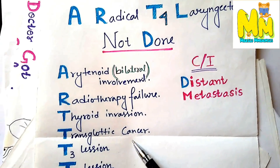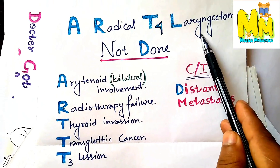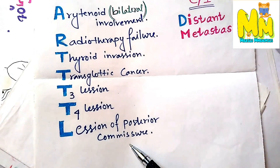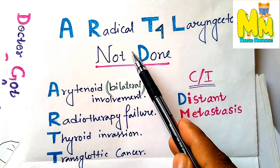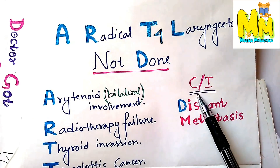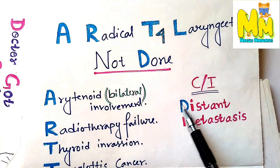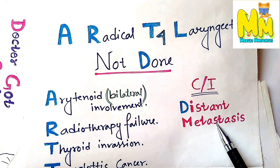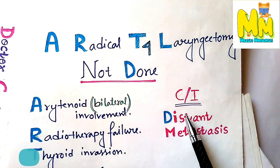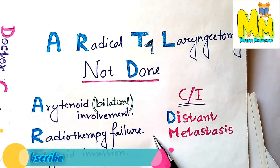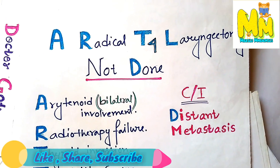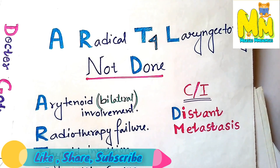L is for lesion of posterior commissure. By the phrase 'Not Done,' it represents the contraindication. D stands for distant metastasis — when there is distant metastasis, total laryngectomy is contraindicated. That completes our mnemonic.